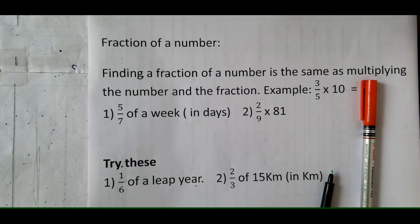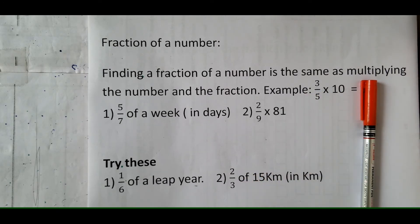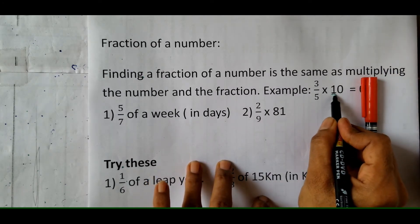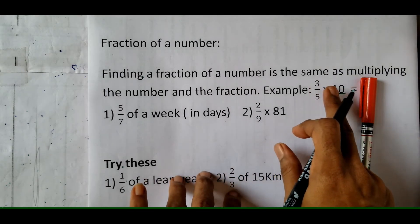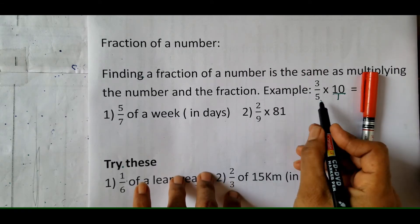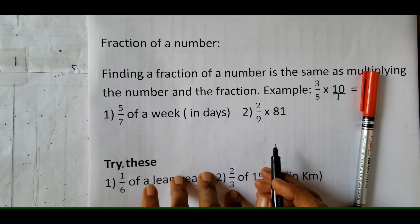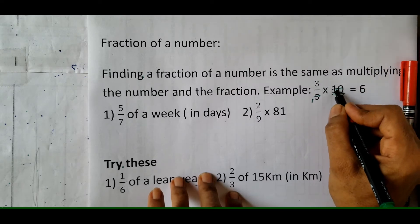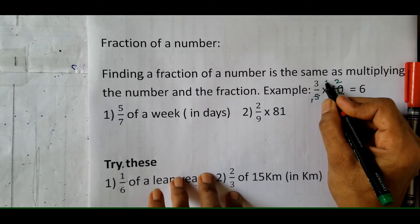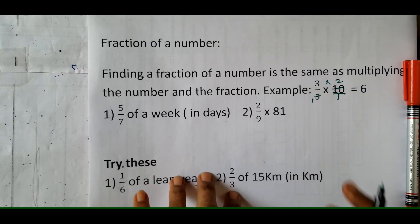Let us take a new topic now — fraction of a number. Finding a fraction of a number is the same as multiplying the number and the fraction. For example: 3 upon 5 into 10. Write 10 as 10 upon 1. Now 5 and 10 have 5 in common — 5 ones are 5, 5 twos are 10. So it equals 3 into 2 which is equal to 6.